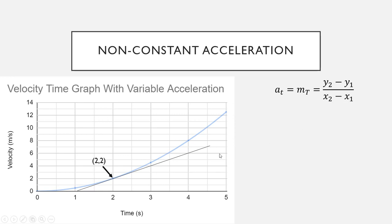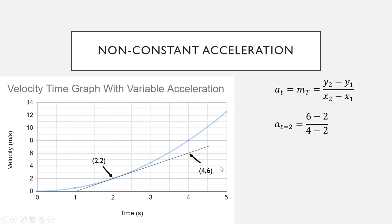We need to choose two points on the tangent line. I'm going to choose the point (2, 2), because that has to be on the line since we drew the tangent at that specific point. Then I look along the line and find a convenient second point: (4, 6). So (2, 2) is our (x1, y1) and (4, 6) is our (x2, y2). Substituting into the gradient expression, the acceleration at t equals 2 is (6 minus 2) over (4 minus 2), which gives 4 over 2, equalling 2 meters per second squared.